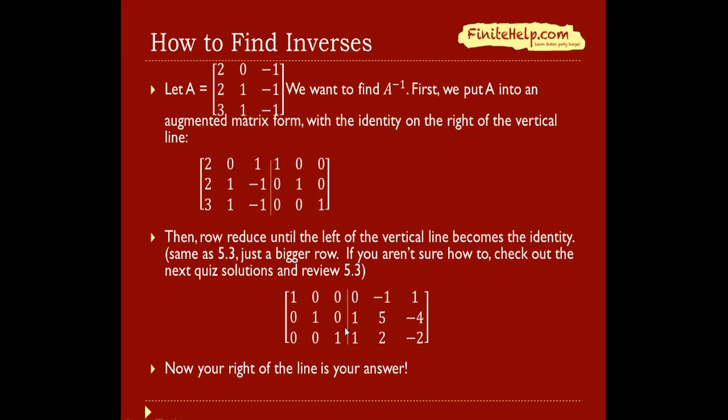Here I already have the reduced version. So here we have reduced the left side to the identity, and here the right side, this is the inverse of A. So here is A inverse. Again, check out the next quiz solution if you're unsure about how this reducing should have gone.